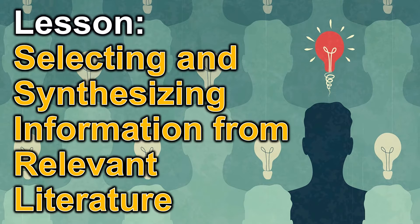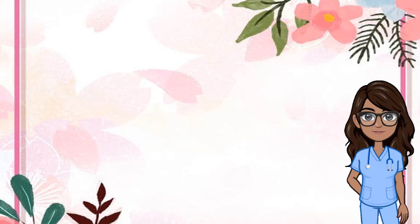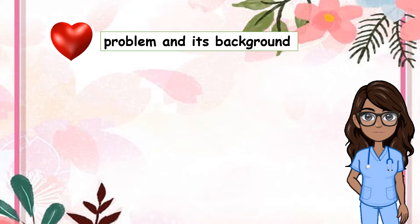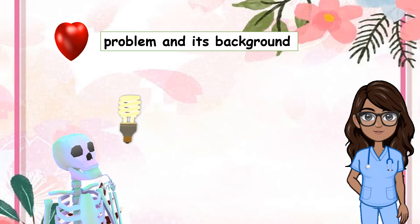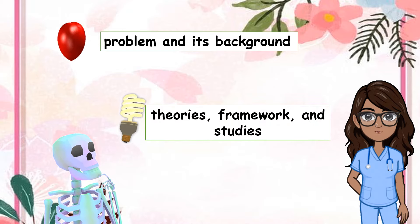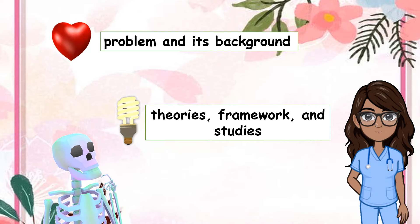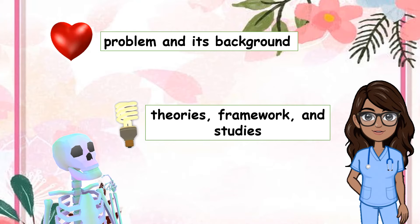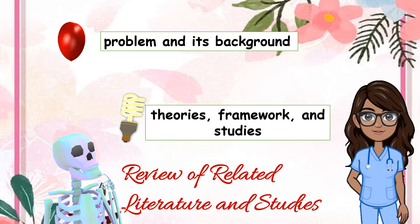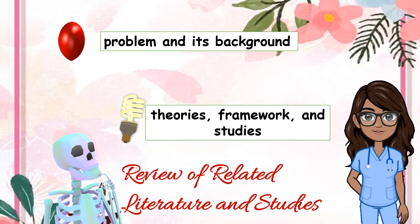Our lesson today is Selecting and Synthesizing Information from Relevant Literature. Your previous lessons focused on how you would create the heart of your study — you carefully crafted your problem and its background. This time, you will form a firm foundation like a skeleton that will support your study. That skeleton, made up of bones, would be represented by theories, framework, and studies gathered through reviewing relevant literature. You will build the foundation of your study, beginning by knowing how to select and synthesize information to serve as support — this would be the review of related literature and studies.